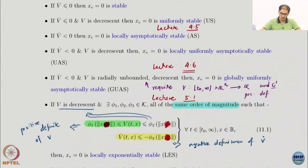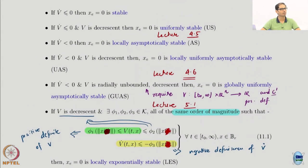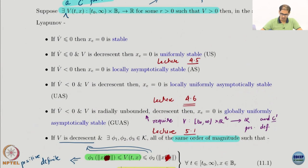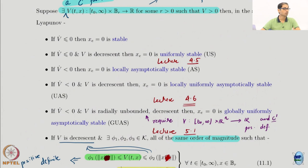Once we had the setup of positive definite functions, radially unbounded functions, and decrescent functions, the statement of the Lyapunov theorems was really easy — not difficult to verify either. Once you understand what a positive definite function is — remember: if some states do not appear in a function, it cannot be definite.